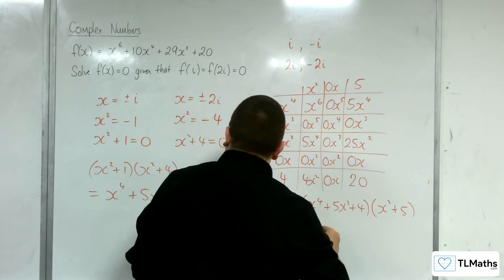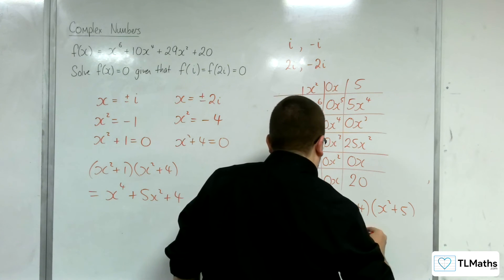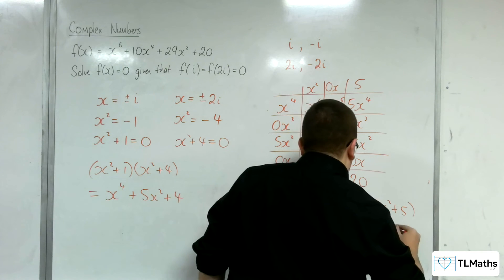So in other words, it is x squared plus 1, x squared plus 4, x squared plus 5.